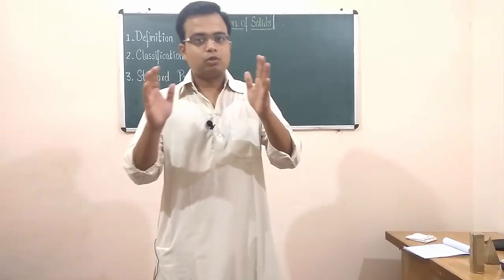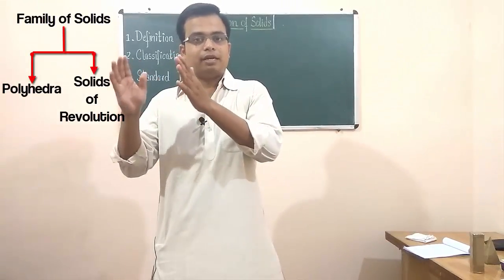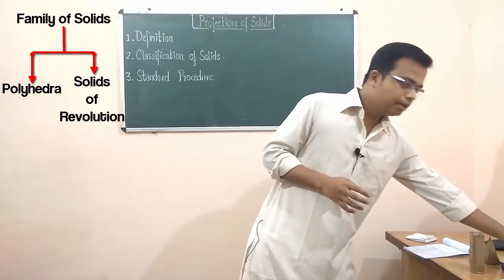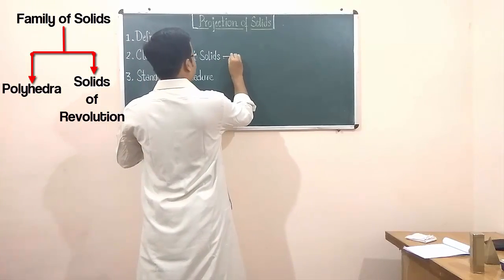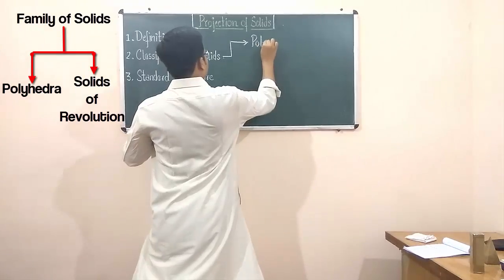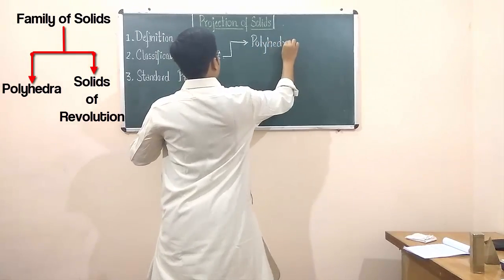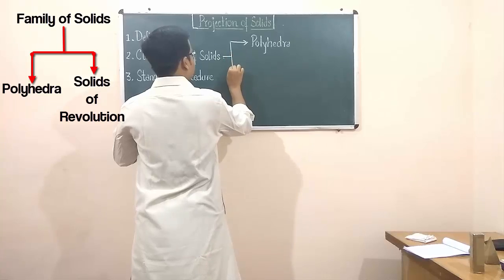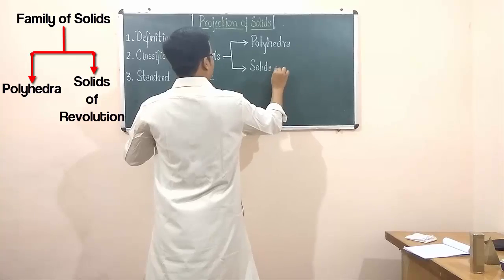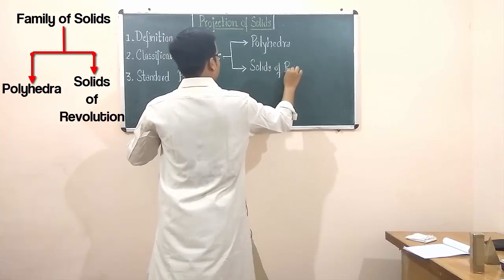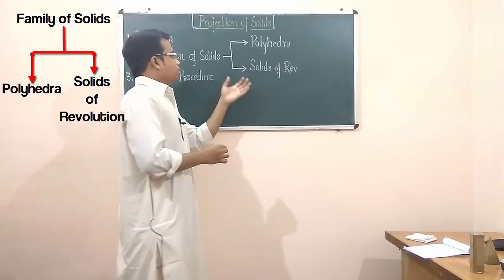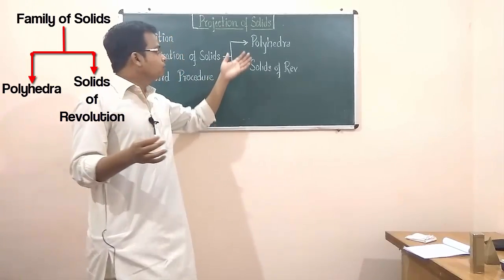Solids have been broadly divided into two main groups. When you speak of classification, there are two types: one is polyhedron or polyhedra, while the other one is solids of revolution. These are the two main members of the solid family.